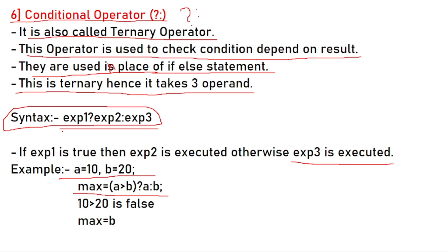In this example, 10 > 20 is false, so expression1 is false. Therefore expression2 will not execute; instead expression3 is executed. So the maximum value is b — the answer here is expression3, which is b.